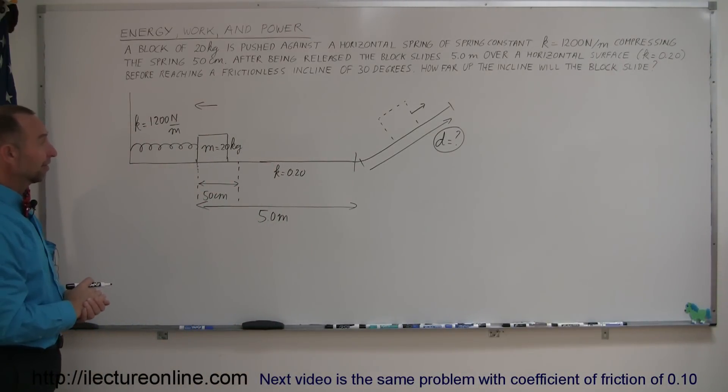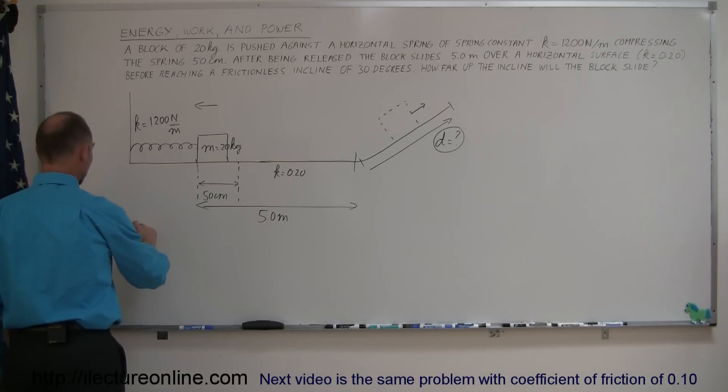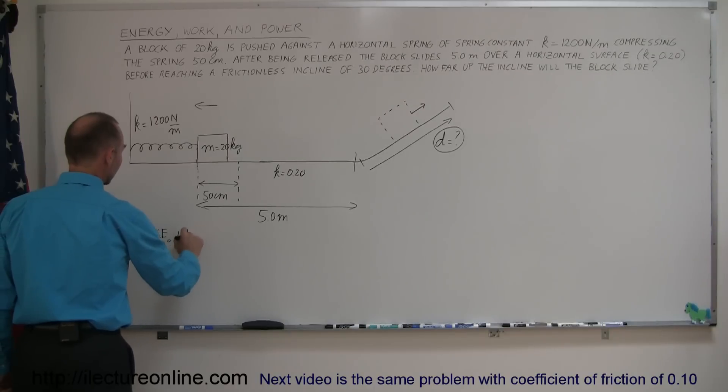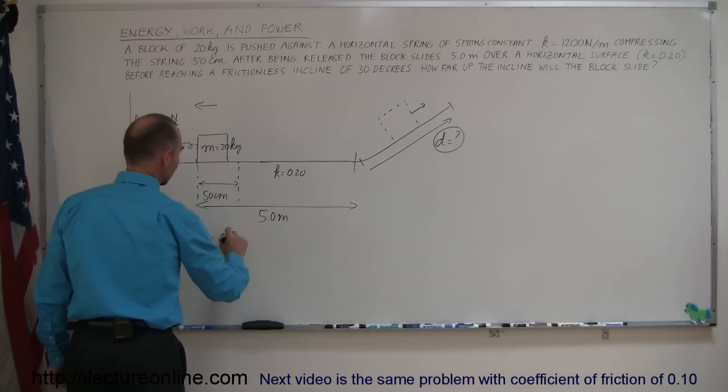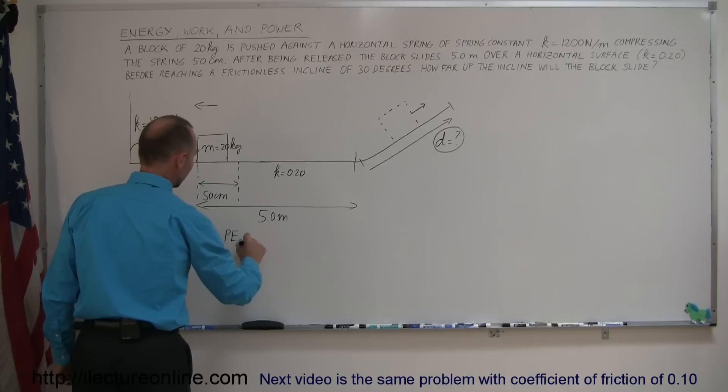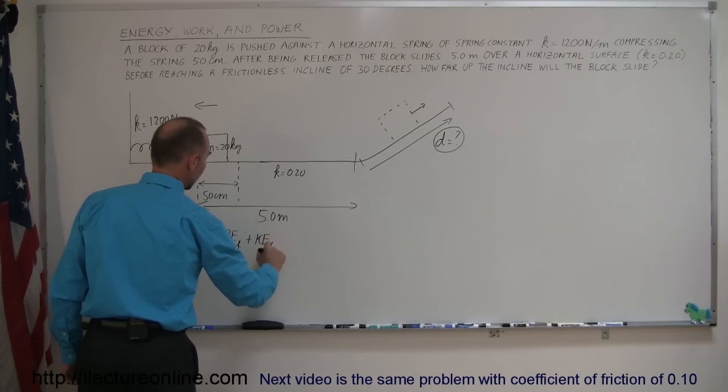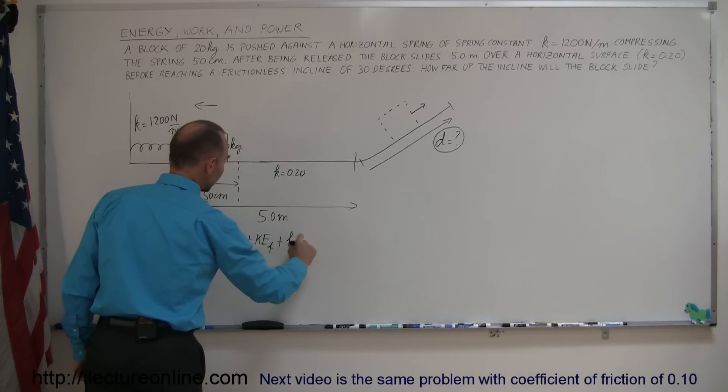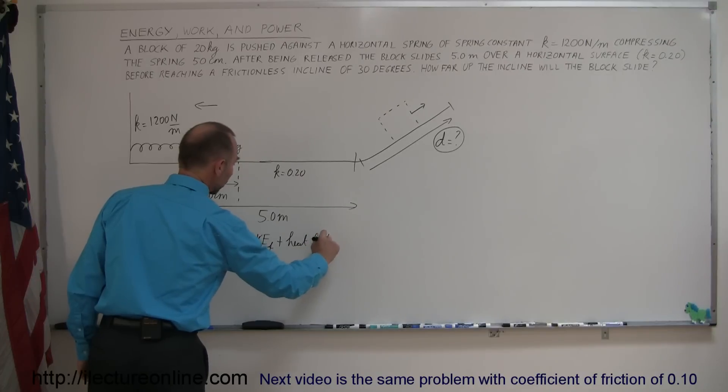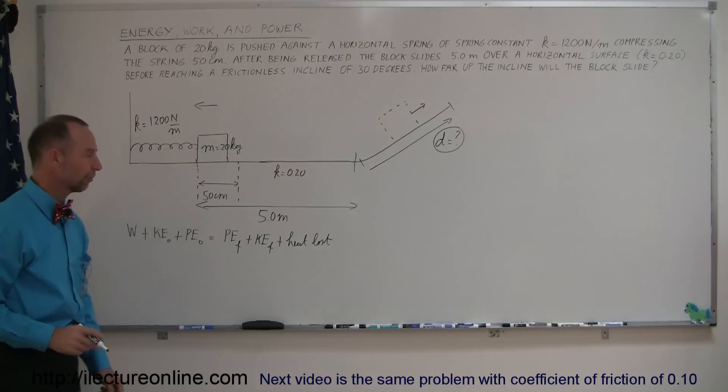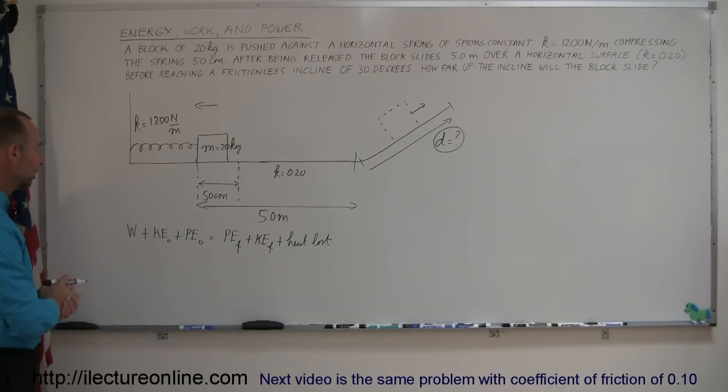Alright, the best technique for that is to use our equation where we say that the energy initially, any work put into the system plus any kinetic energy the system has plus any potential energy the system has equals the potential energy at the end, final, plus the kinetic energy at the end plus any heat loss to overcome friction or wind resistance or any other resistive forces. That should be a familiar equation if you've seen videos like this before.